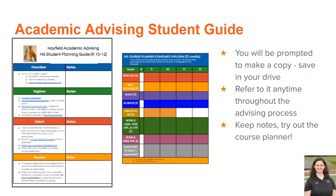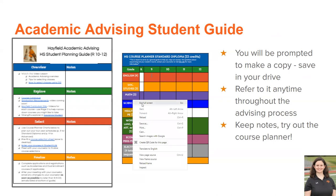So the academic advising student guide is something we introduced a couple of years ago. All of you will be able to make your own copy that we encourage you to save to your drive. It has links to all of the important resources for you to explore classes and take notes about what you might want to take for next year. You can refer to it at any time throughout the advising process, and it has a lot of really great features. So I'm going to go ahead and do a little demo here.